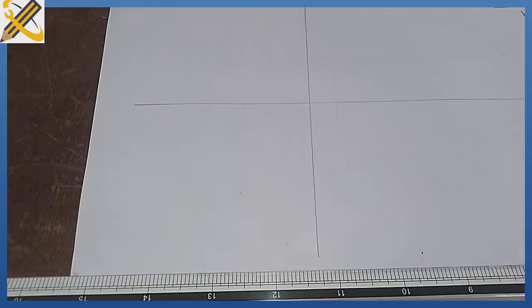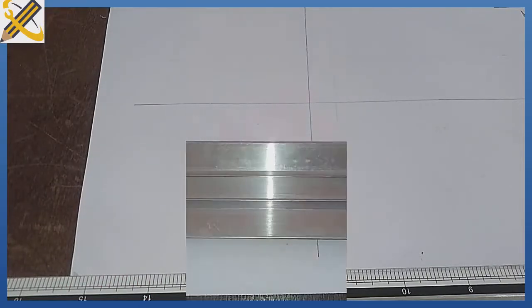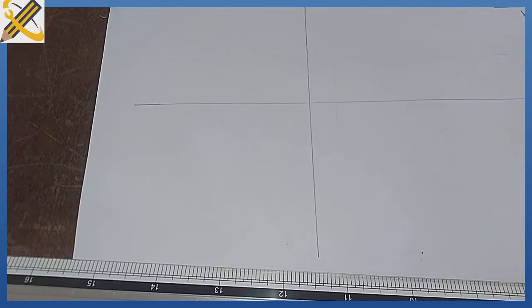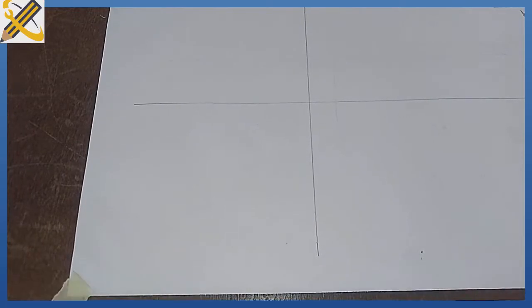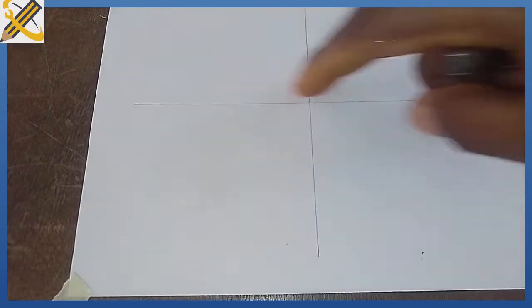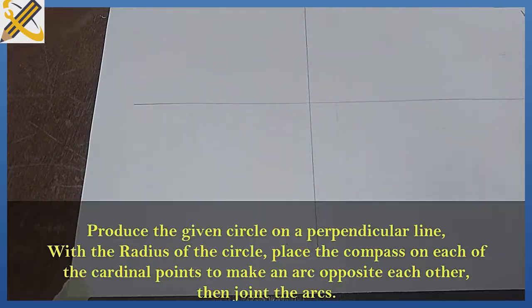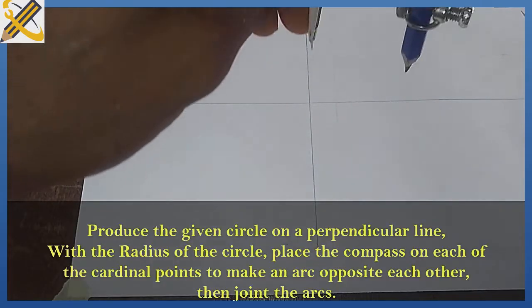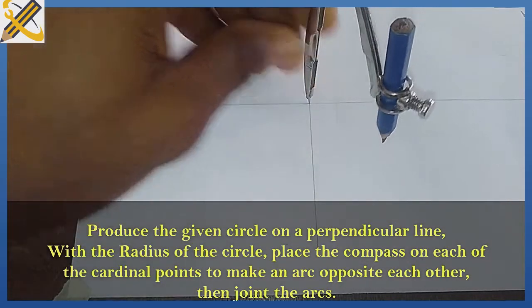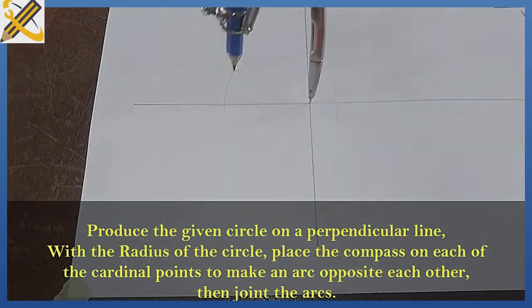To divide the circle into 24 parts, first draw two lines perpendicular to each other from the center. From that center point, pick the radius of your circle, then produce the circle.